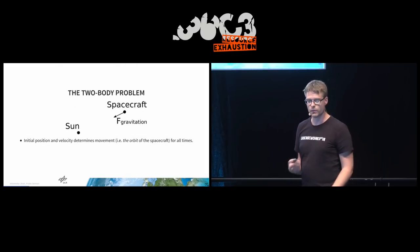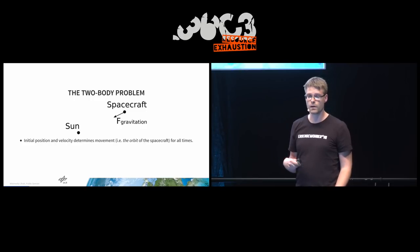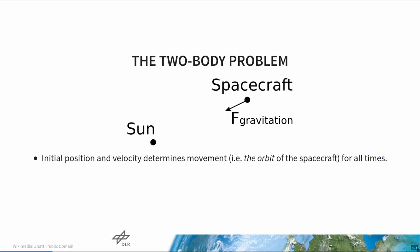So what's the two-body problem about? In principle, we have the Sun and a spacecraft being attracted by the Sun. The Sun is obviously much heavier than a spacecraft, meaning we will neglect the force that the spacecraft exerts on the Sun. Notice that if you specify the position and velocity of a spacecraft at some point, then the gravitational force will actually determine the whole path of the spacecraft for all time. This path is called the orbit, and we want to find ways to efficiently change orbits in order to reach Mars.